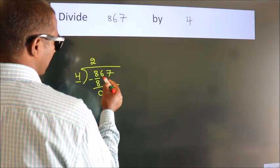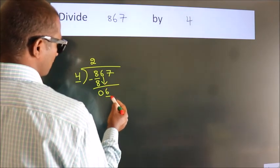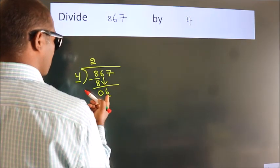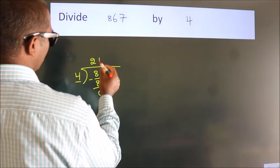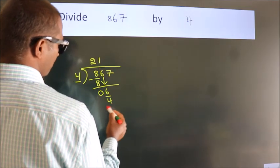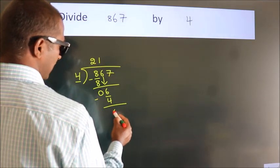After this, bring down the beside number. So 6 down, so 6. A number close to 6 in the 4 table is 4 ones, 4. Now we subtract. We get 2.